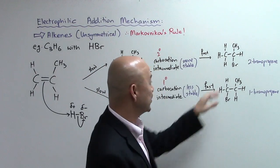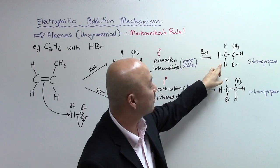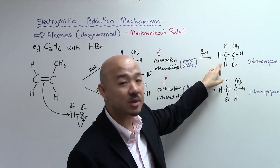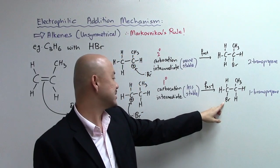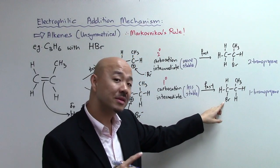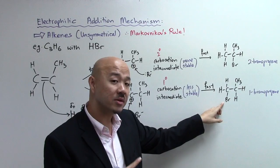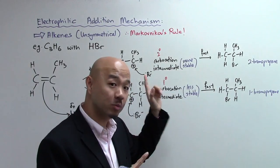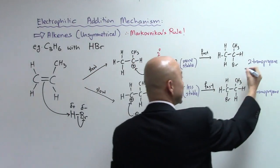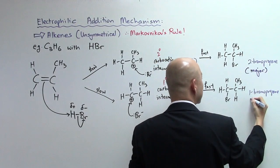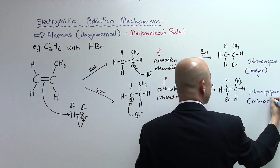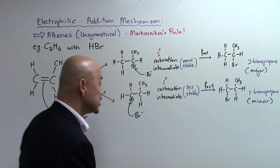Since the IUPAC name is different, they must be two different compounds. In fact they are known as isomers. Now we will identify this as the major product, so you're gonna have more of this, whereas this is known as the minor product, so you have less of this when you undergo electrophilic addition of propene with HBr.